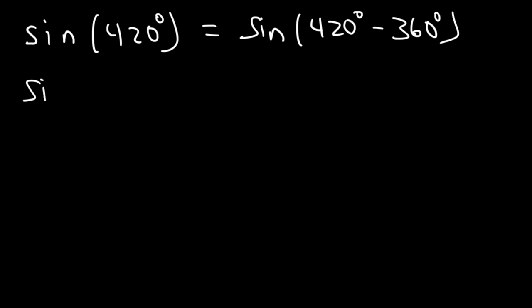Now let's apply what we've learned into a problem. Let's say if we wish to evaluate sine of 420 degrees using periodic properties. So we got to find a coterminal angle that's less than 420. Let's subtract 420 by 360. 420 minus 360 is 60. So sine of 420 is equal to sine of 60.